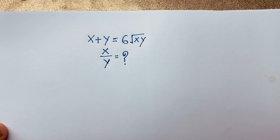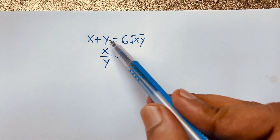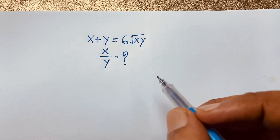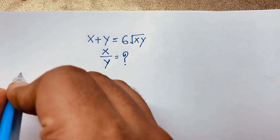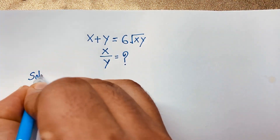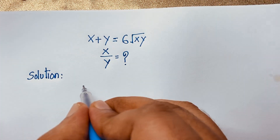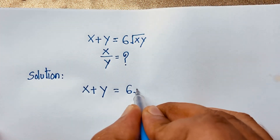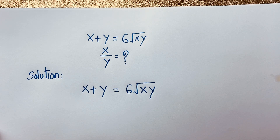Hello everyone, welcome to the classroom. Today we'll solve an interesting German Math Olympiad question. The question is: x plus y is equal to 6 times the square root of xy. We need to find x over y.